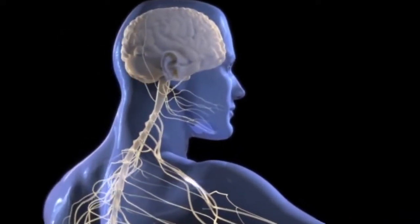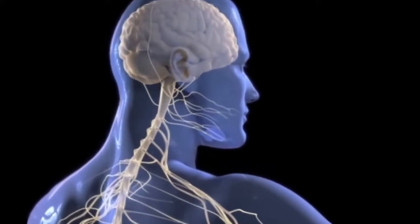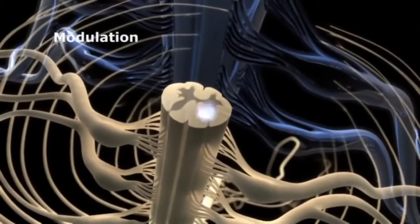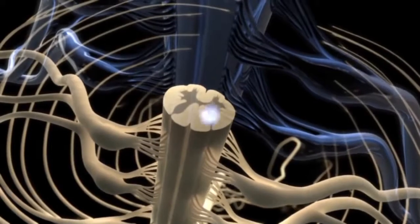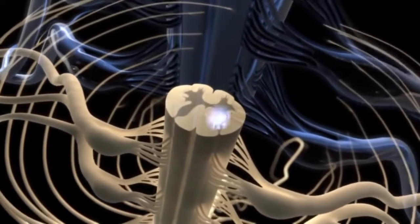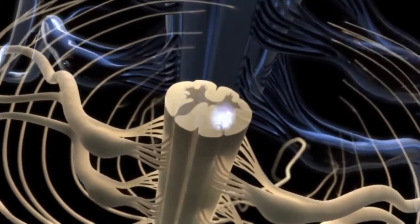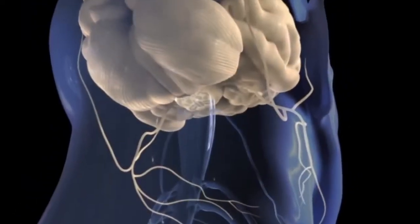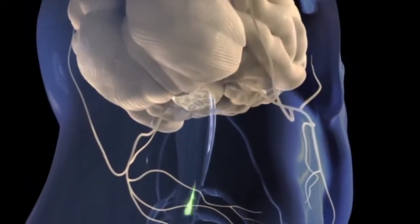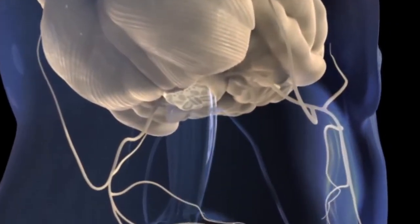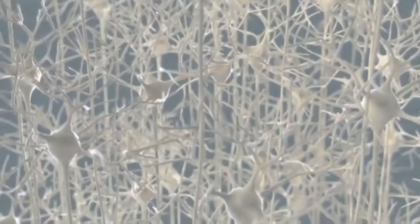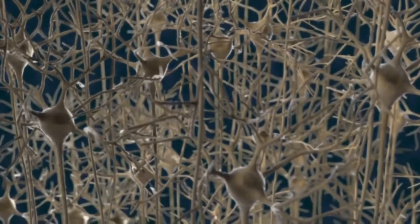Ascending nociceptive transmissions are modulated by inhibitory or facilitatory control systems in the dorsal horn of the spinal cord. The process of inhibition and facilitation is regulated by neurons projecting from the nucleus raphe magnus in the lower brain stem. Nociceptive signals are transmitted through descending projections in the dorsal horn of the spinal cord.